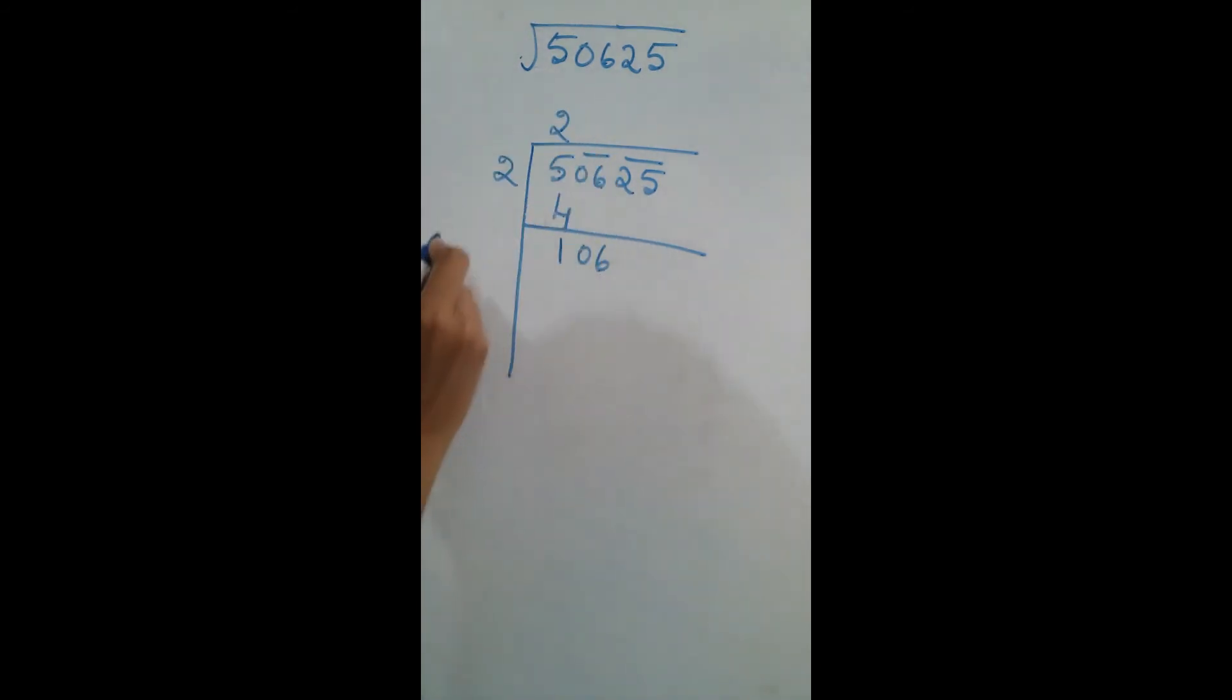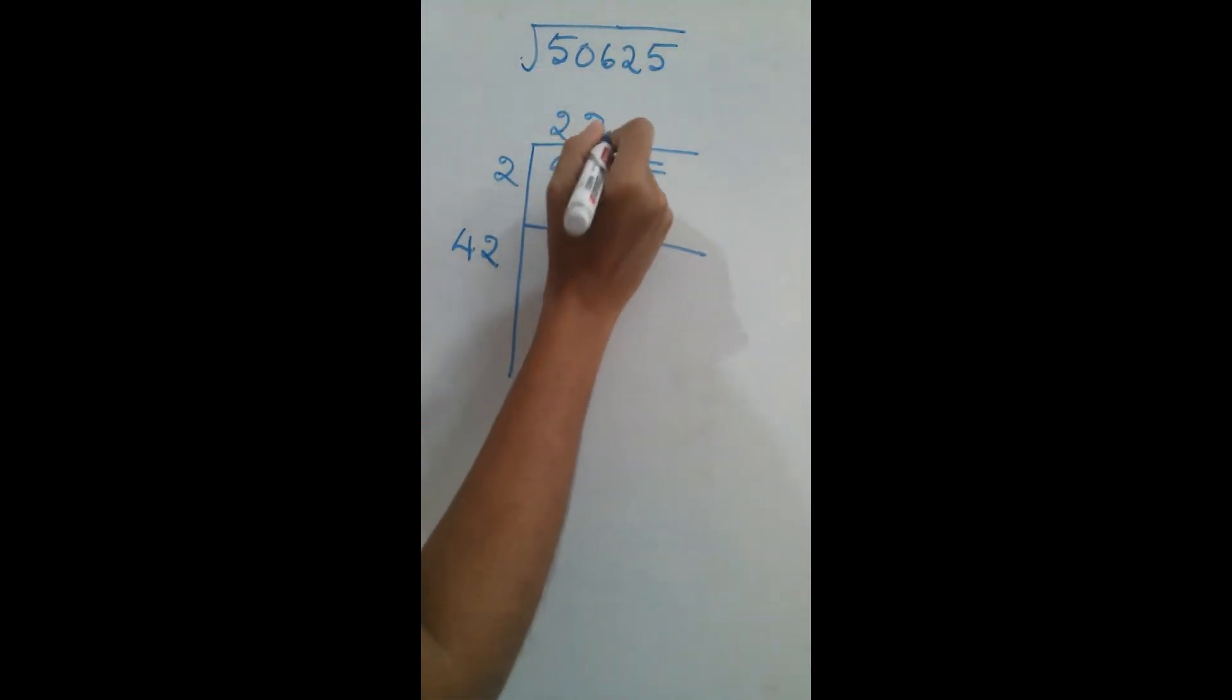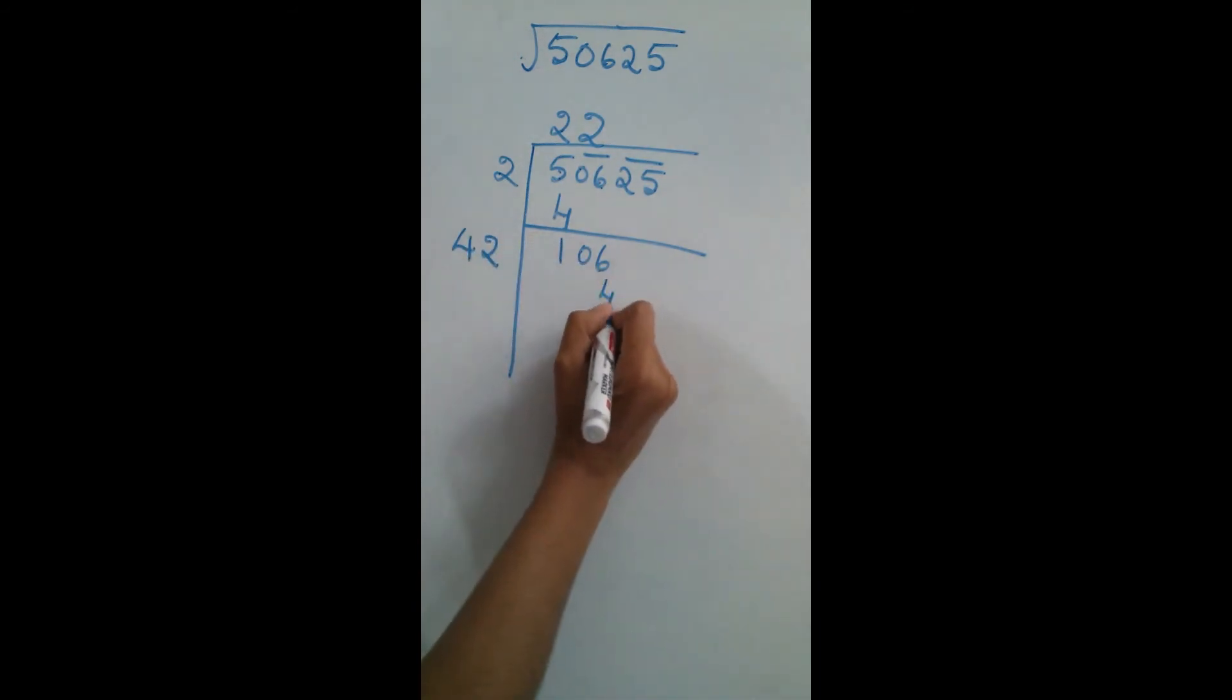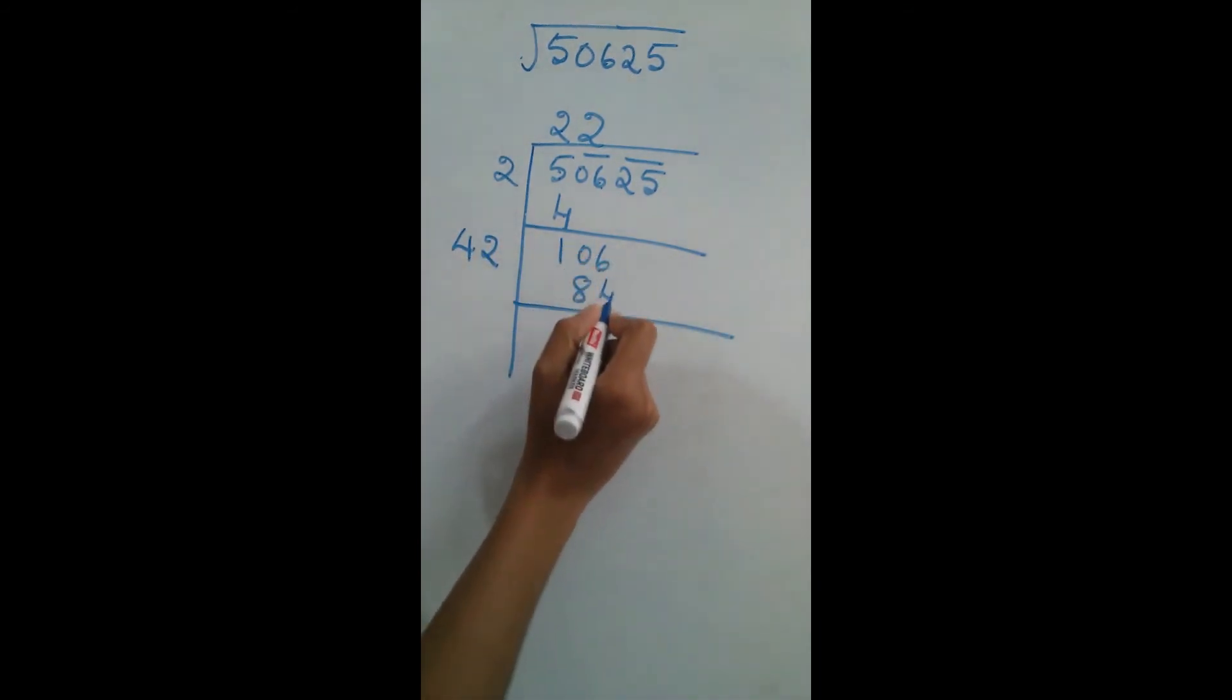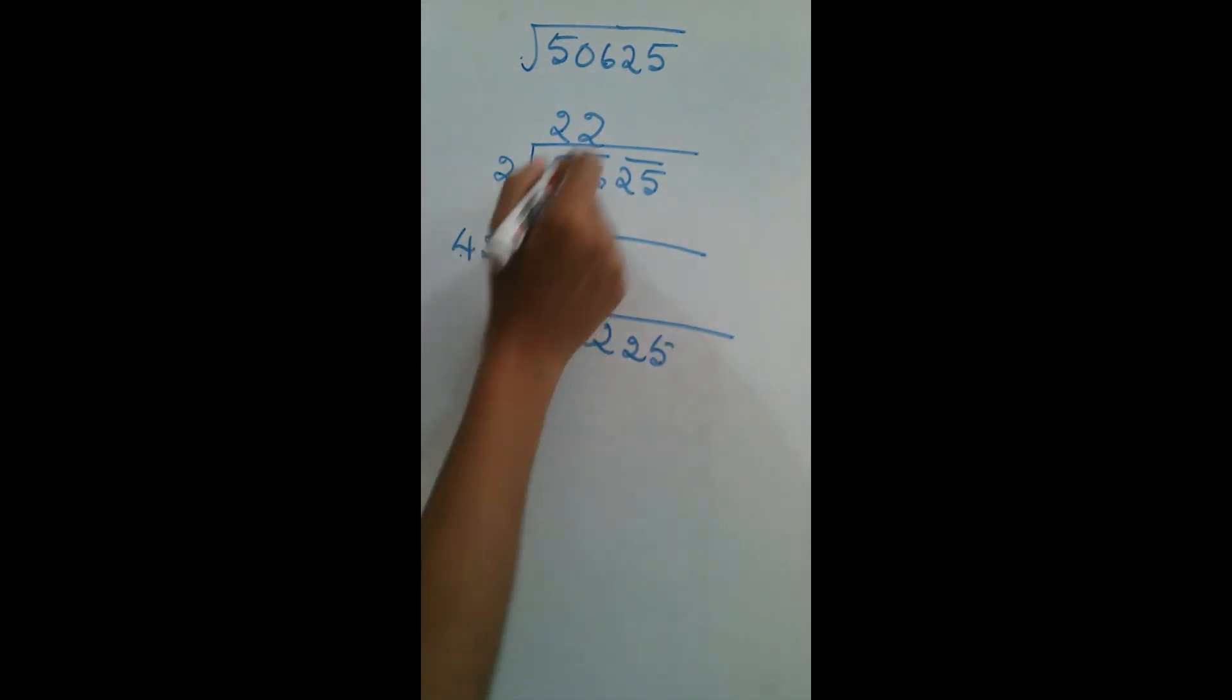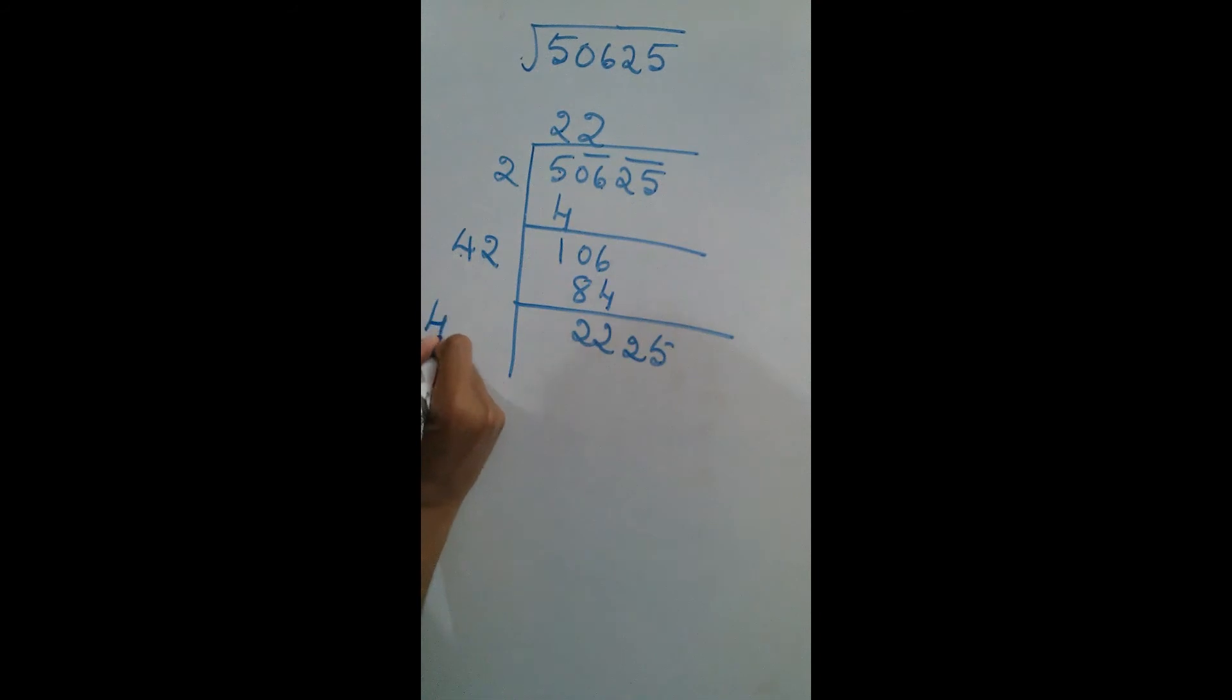I am bringing these two numbers down. Now 2 plus 2 is 4. Now I am writing 42. 42 into 2. 2 times 4 is 8. 6 minus 4 is 2. This one is 2. Now I am bringing 25 down.